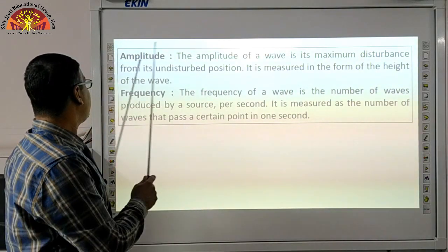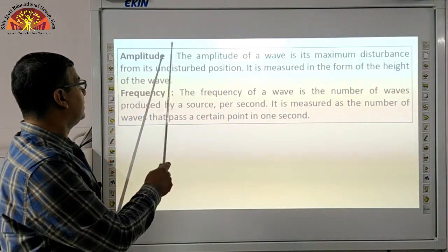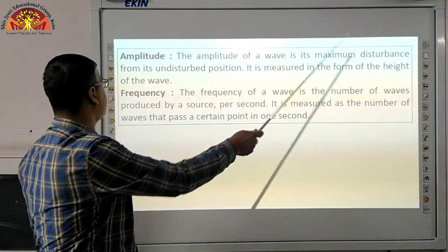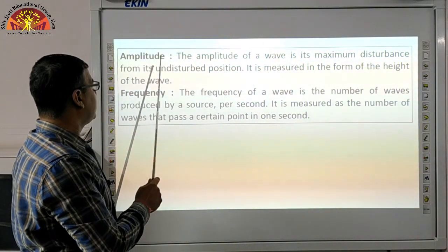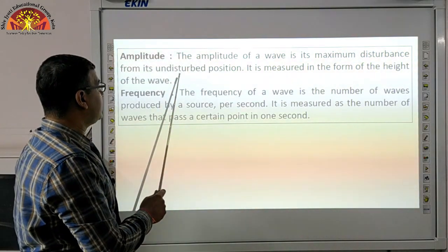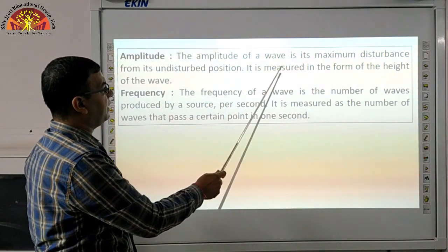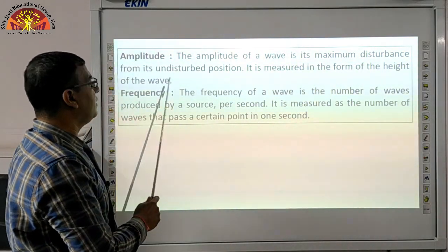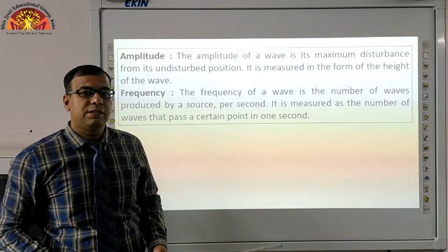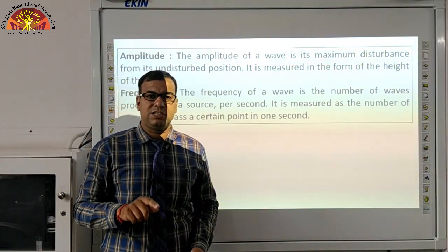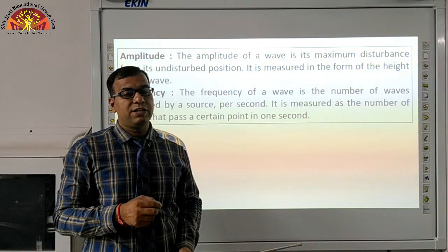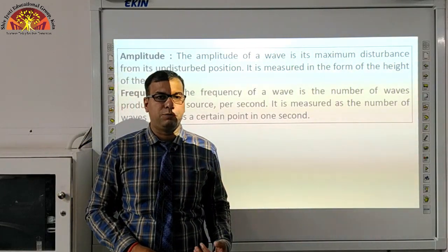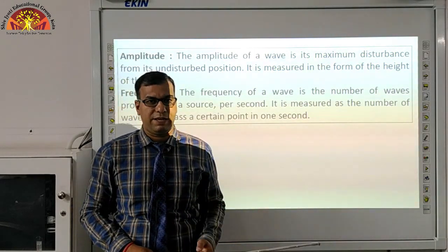First is amplitude. The amplitude of a wave is its maximum disturbance from its undisturbed position; it is measured in the form of the height of the wave. Amplitude means, if a signal wave is moving, the amount of disturbance in that wave — its peak point — that is what we call amplitude: how much disturbance is there in that particular signal.